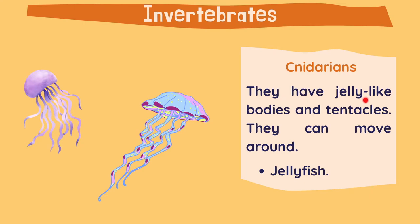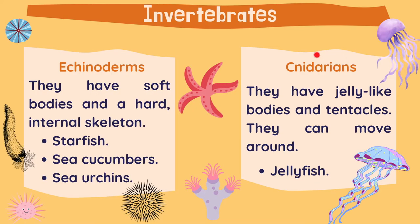Nidarians have jelly-like bodies and tentacles. They can move around the sea, and the main animals in this group are jellyfish. These two groups live underwater. Eukinoderms have a soft body, and nidarians are also soft — it's more like jelly.